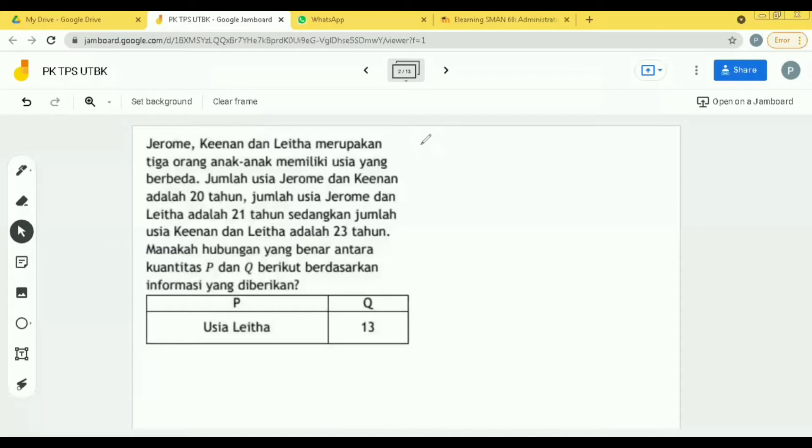Oke, anggap J itu adalah Jerome, Kinan itu adalah K. Kalau jumlah itu berarti dipisahkan oleh tanda apa? Tambah, good. Jerome plus Kinan sama dengan 20.